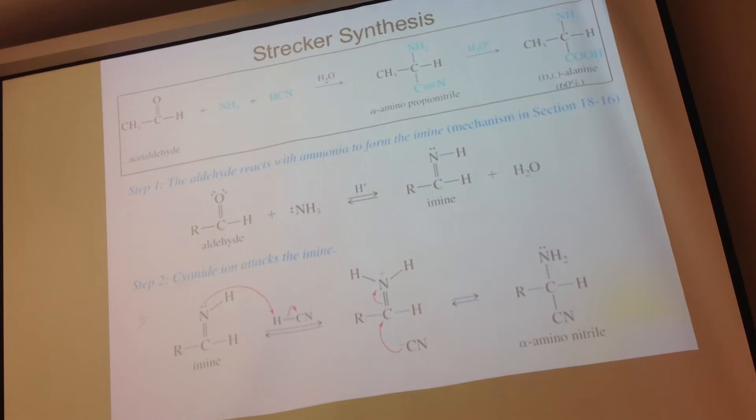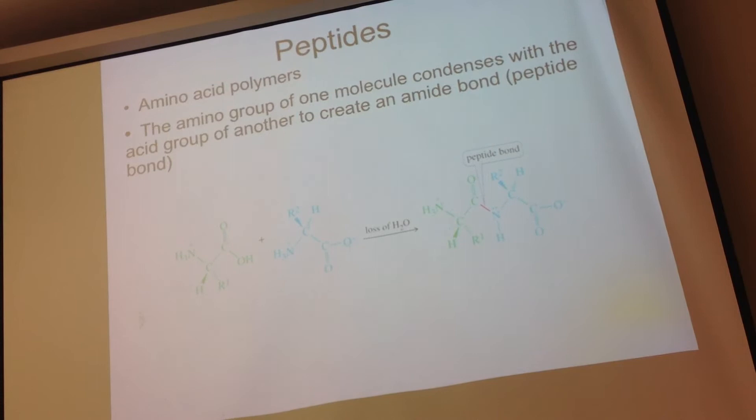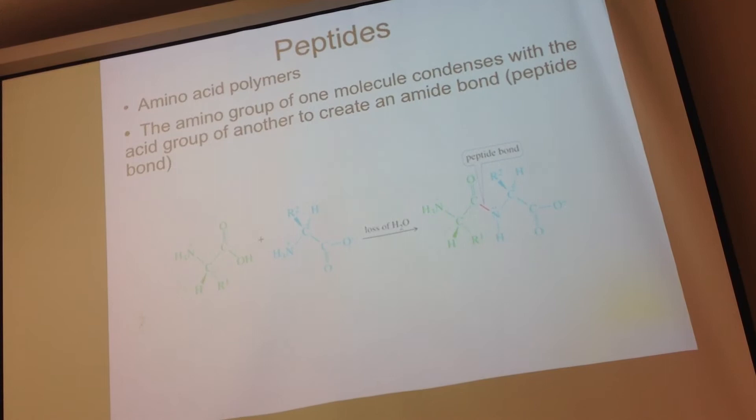Now going into peptides — they are amino acid polymers. What you're going to do is put a bunch of amino acid monomers, the individual units, together to form a polymer.